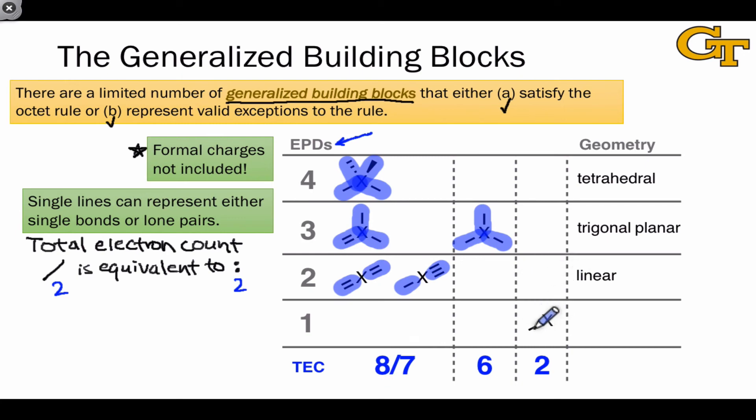Finally, there is one important building block that involves only a single electron pair domain, and this is the building block associated with hydrogen atoms, which we should recall represent valid exceptions to the octet rule because they only need a duet or two total electrons to complete their valence shells.